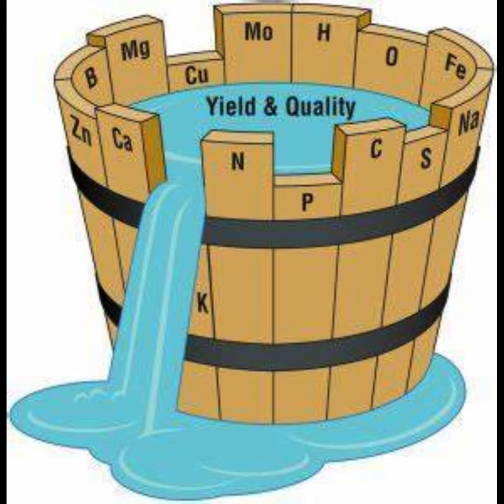The law is often illustrated with the metaphor of a barrel with staves of varying lengths. The barrel can only hold as much water as the shortest stave allows, regardless of the lengths of the other staves. Similarly, a population's growth is determined by the scarcest resource.